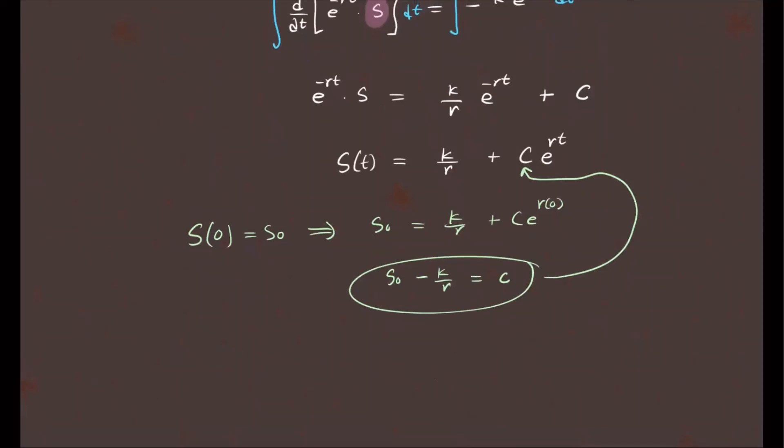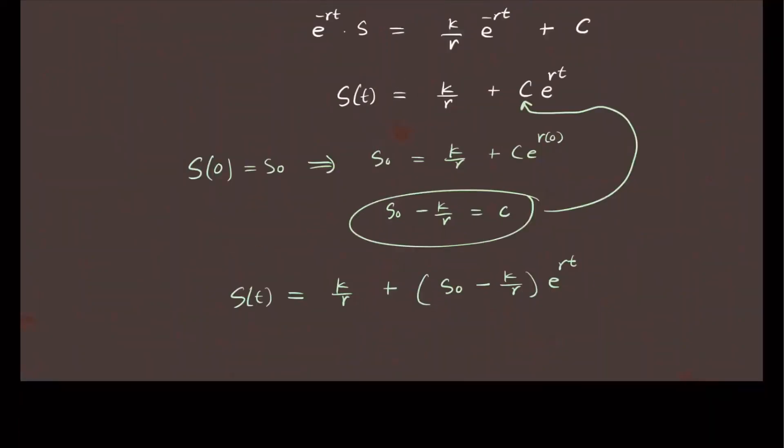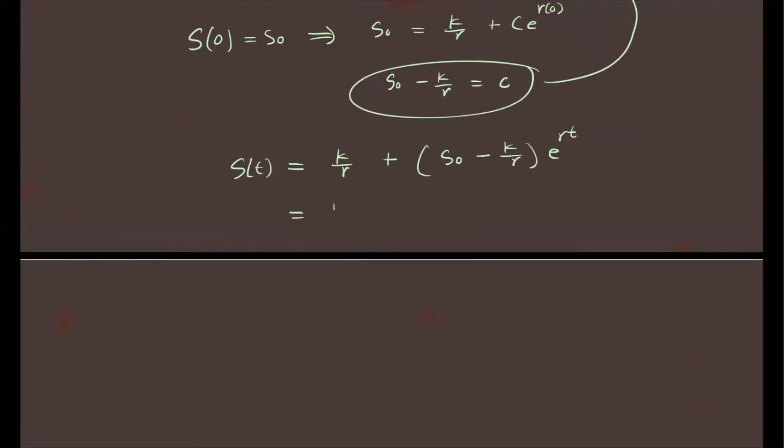So the function S of T that we're after is K over R plus C, which is what we just computed, that's S naught minus K over R times e to the Rt. I'm going to distribute e to the Rt and group this a little bit more, so you will have K over R plus S naught e to the Rt minus K over R e to the positive Rt. So I just distributed that, and I'm going to rearrange and group these guys together since they both share K over R.